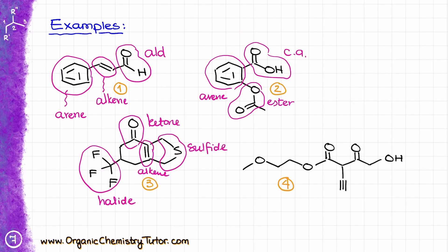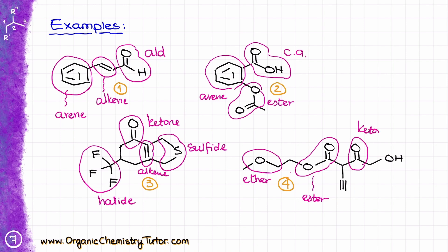Finally, for molecule number four: I have an ether, then an ester, then a ketone, and then an alcohol. Notice that in this case it is a ketone and an alcohol — because they are not directly connected to each other, it's not a carboxylic acid; there's a carbon in between. One other functional group in compound number four is an alkyne. Did you get all of them? Let me know in the comments below, tell me which functional group is your favorite, and I will see you in the next video.